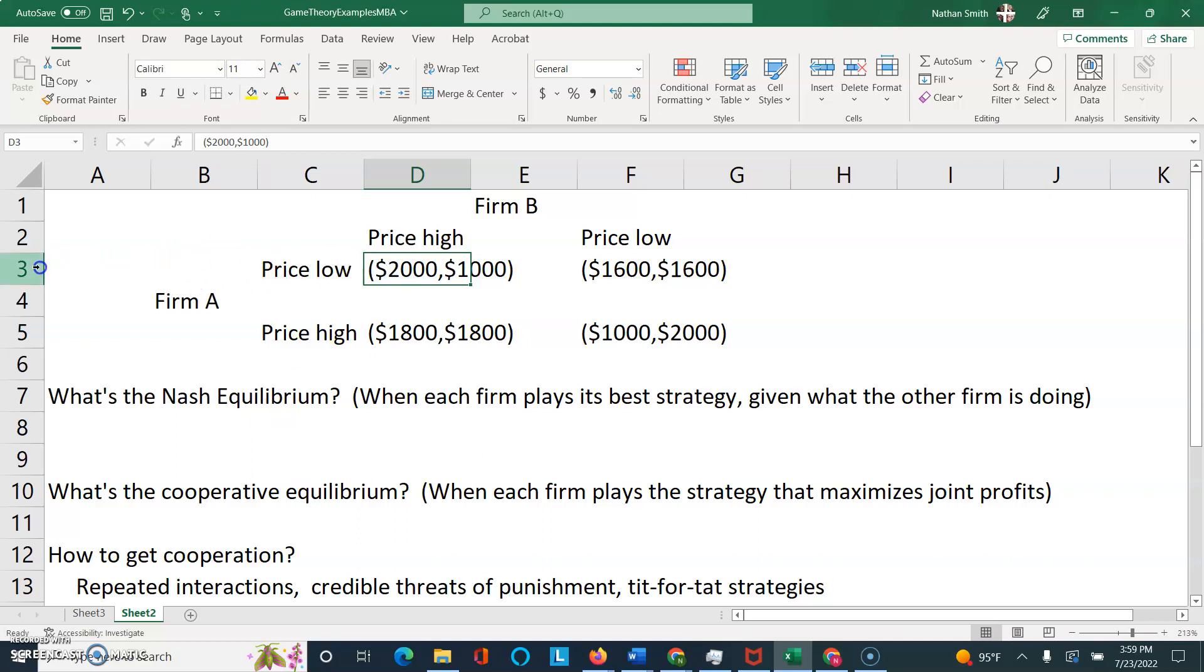What I would do is I would highlight mentally, or literally I'm going to do it in Excel here by shading the row. Let's say that Firm A is pricing low. Now take a look at Firm B's options. It can either price high or price low. If it prices high, it would get the number on the right here of $1,000. If it prices low, it would get the number on the right of this pair, which would be $1,600. Now, you always want to ask yourself, which is the better payoff? $1,600 is a higher profit than $1,000. So, Firm B is going to price low, given that Firm A has priced low. So what I'm going to do is I'm going to use Excel's bolding just to help us notate that $1,600 is the higher profit, and Firm B is going to price low.